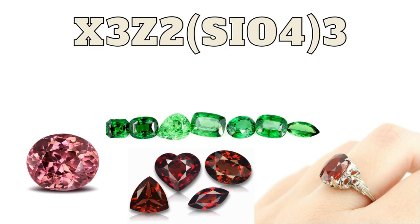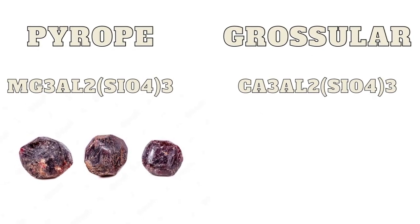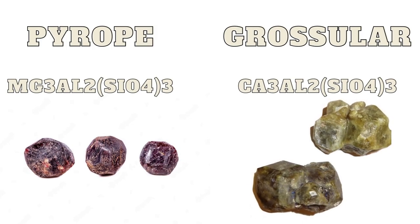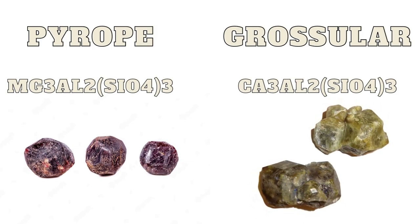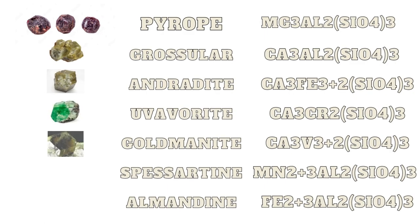The variable elements could be aluminum, iron, manganese, etc. For instance, pyrope garnets are magnesium and aluminum for the X and Z respectively, and grossular garnets are calcium and aluminum for the X and Z respectively. For your future consideration, here is a list of some garnet varieties that you may enjoy — they are well worth checking out.